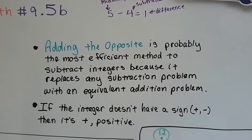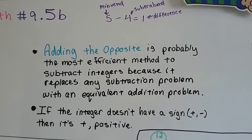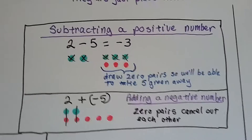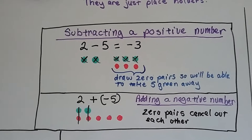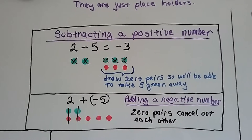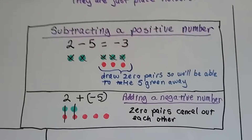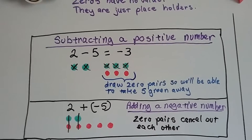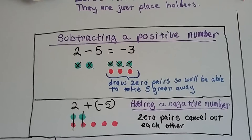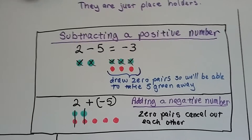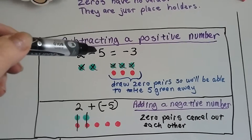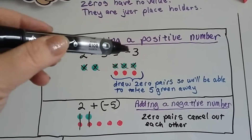If the integer doesn't have a positive or negative sign in front of it, then it's positive. So here's what we mean by adding the opposite: when you're subtracting a positive number, you've got a positive 2 and you're taking away a positive 5. You end up with negative 3, because there wasn't enough in the 2 to take 5 away — it went below zero into the negatives.